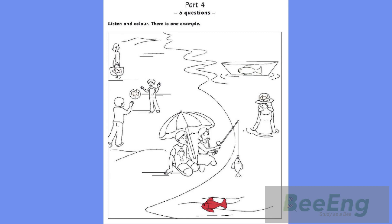3. Can you see the boy under the umbrella? He's wearing a t-shirt with a fish on it. Oh, yes. Good. Color the fish on his t-shirt blue. Okay. A blue fish. That's funny.